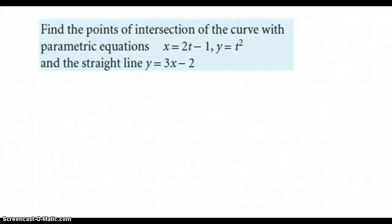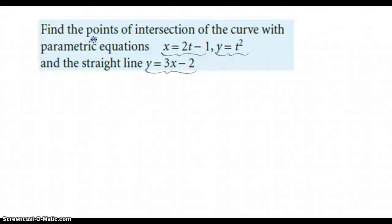Continuing our pre-Cal review of parametric equations, here's an example: find the points of intersection of the curve with parametric equations x = 2t − 1 and y = t² and the straight line y = 3x − 2. We want the points of intersection. Be very careful — it's our habit to just find the x-coordinate, but this says find the points of intersection, so we need to make sure we can do that.